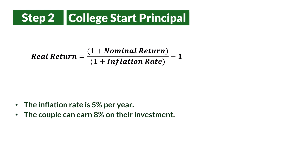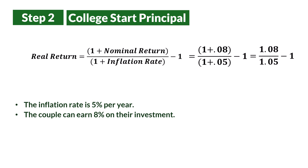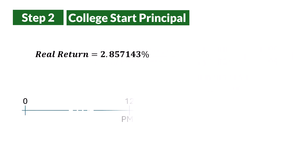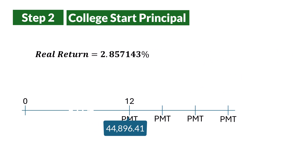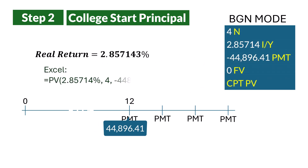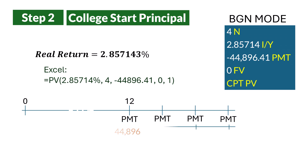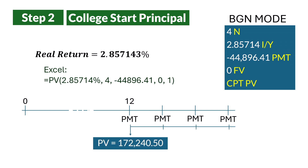In this case, we have a nominal rate of return of 8% and an inflation rate of 5%. Therefore, the real return is 1.08 over 1.05 minus 1, which gives about 2.8571%. We then apply this real rate along with the inflated payment from step 1 using the BA2 Plus calculator or Excel in begin mode for the 4 years of college to obtain $172,240 — the amount required to fund the 4 years of payments.